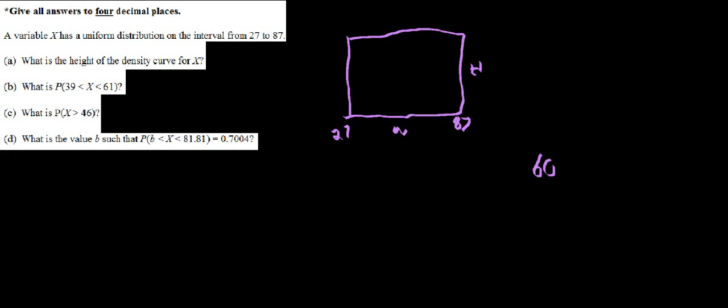So the question is, what do we need to multiply this by in order to get 1? Well, if we solve for x, x is going to be 1 over 60, and that would be our height. Because if we multiplied 60 by 1 over 60, we would get 1 as the area of this uniform distribution.